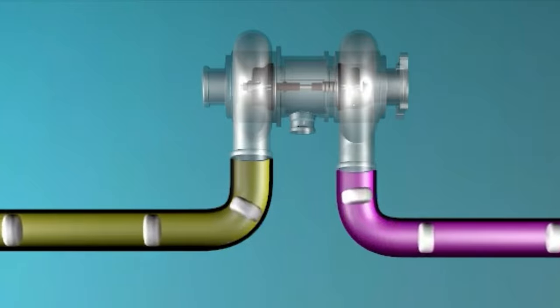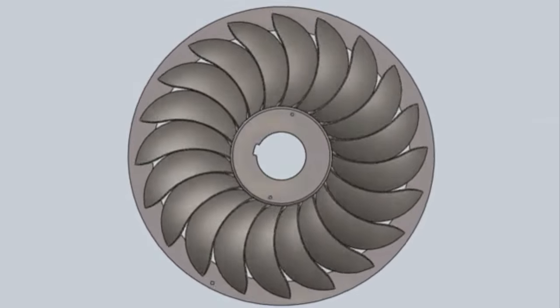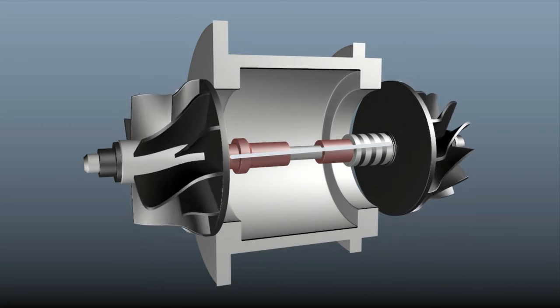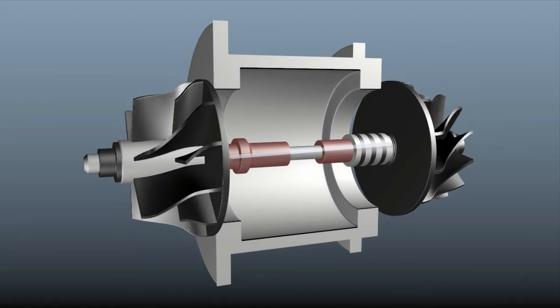This high velocity gas is directed onto the turbine blades where it drives the turbine wheel. As the compressor is connected to the same shaft, it also rotates the blower at high speeds.